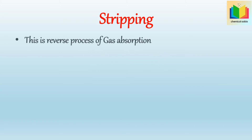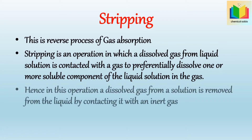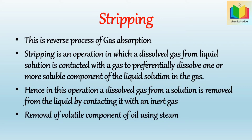Define stripping. Stripping is the reverse process of gas absorption — an operation in which a dissolved gas from a liquid solution is contacted with a gas to preferentially transfer one or more soluble components of the liquid solution into the gas. Hence, a dissolved gas is removed from the liquid by contacting it with an inert gas. An example of stripping is removal of the volatile component of oil using steam.